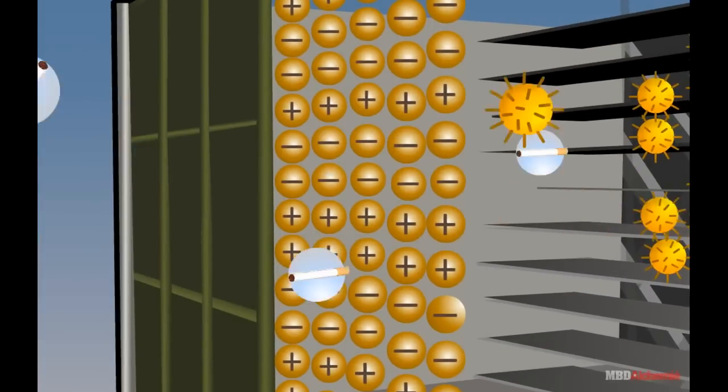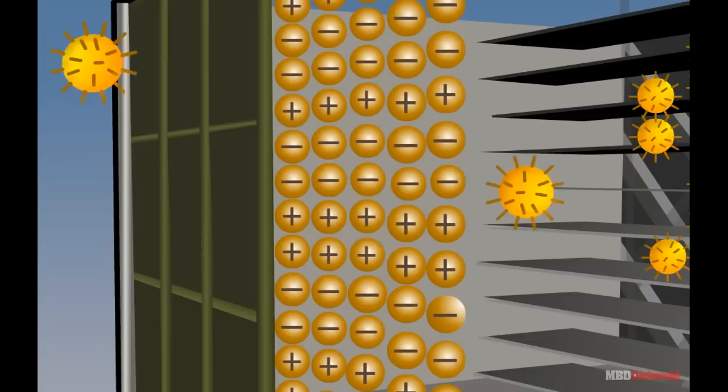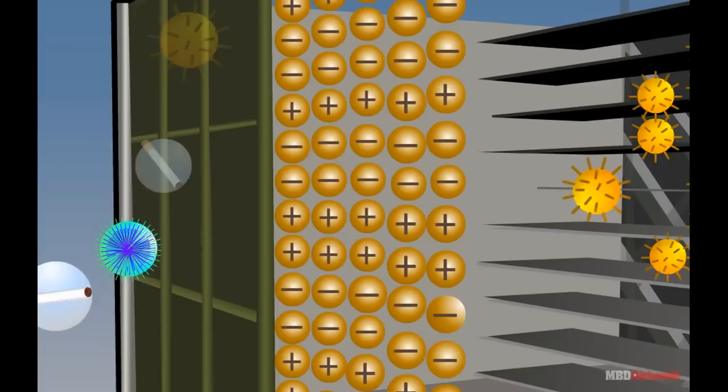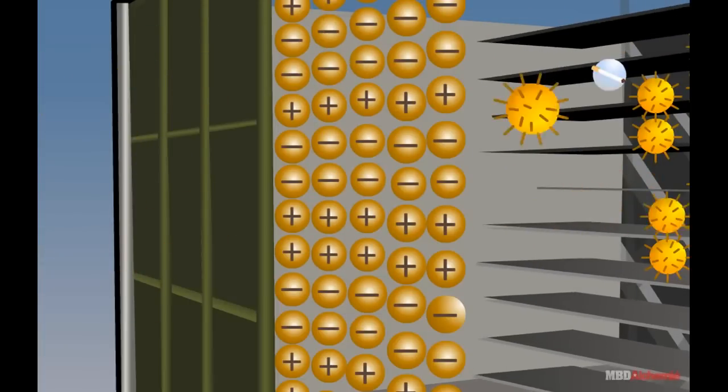an electric discharge takes place across the stack and as a result, air in the stack is ionized. The ionized air consists of ions and free electrons.